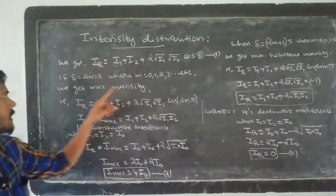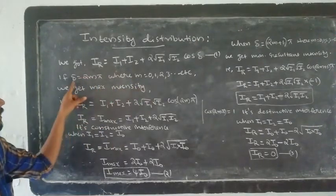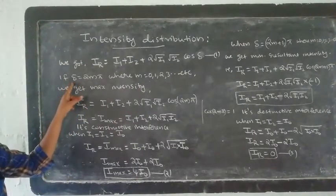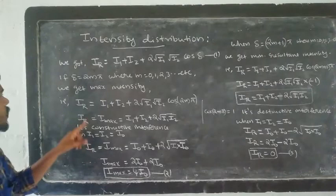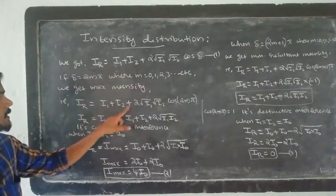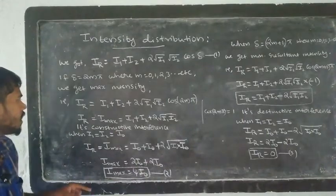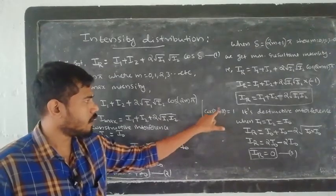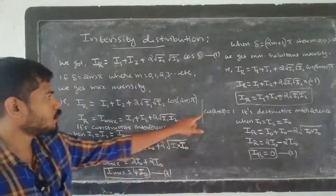The values of delta for constructive interference are: m=0 gives delta=0, m=1 gives delta=2π, m=2 gives delta=4π, m=3 gives delta=6π, and so on — all even multiples of π. For these values, cos(2mπ) = 1.